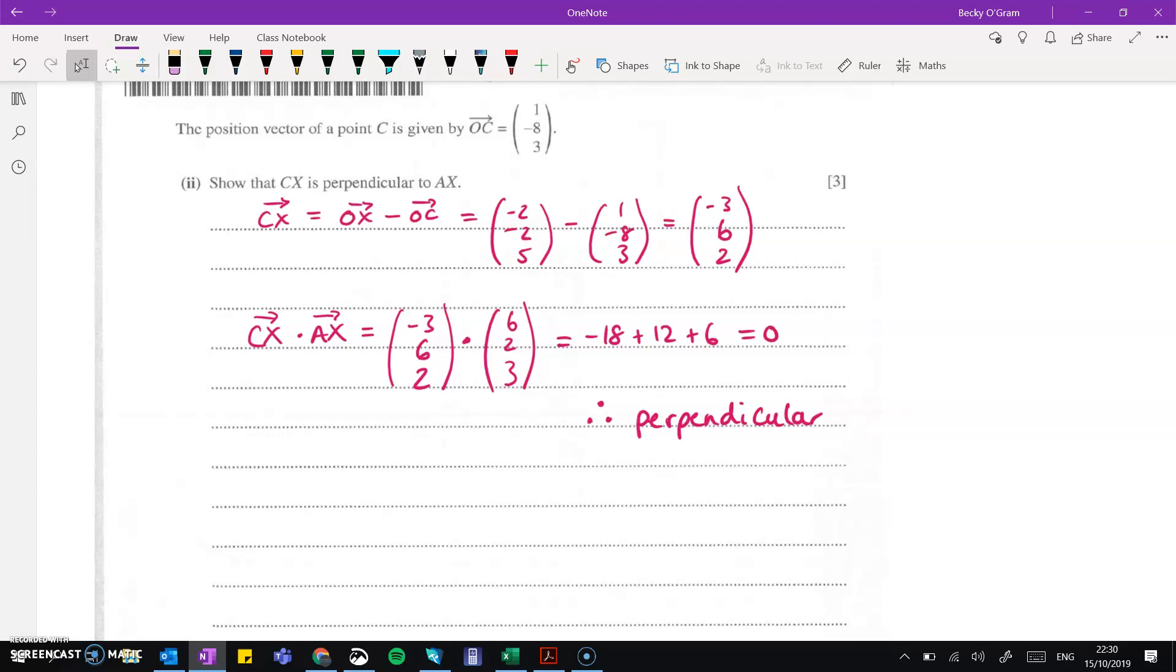Then we're given a point c. We're told that cx is perpendicular to ax. You can draw yourself a little picture if it helps. So c to x is going to be this vector here. We're told that it's perpendicular to ax, or rather, we're asked to show that it's perpendicular.